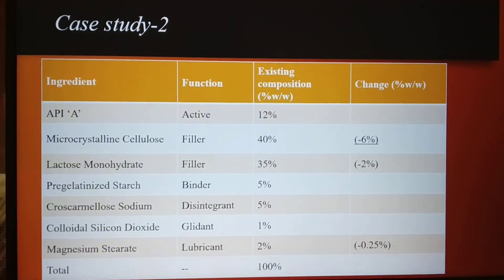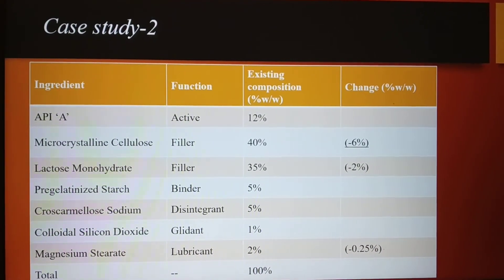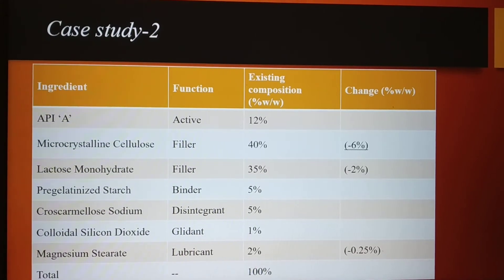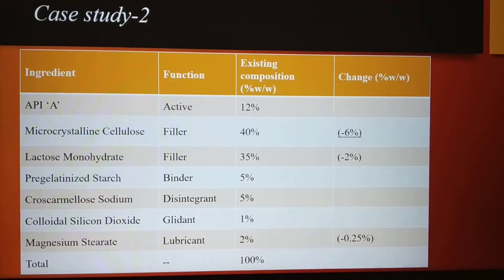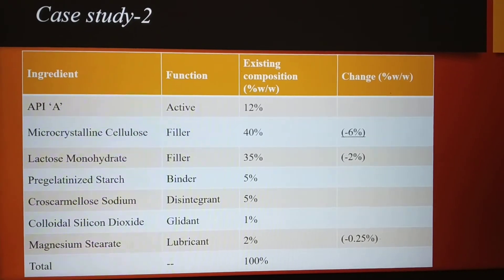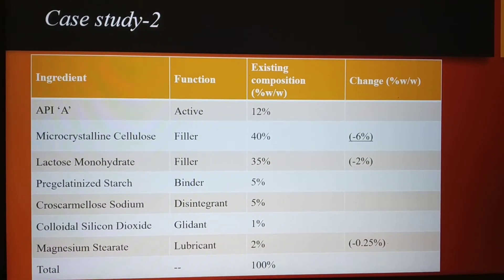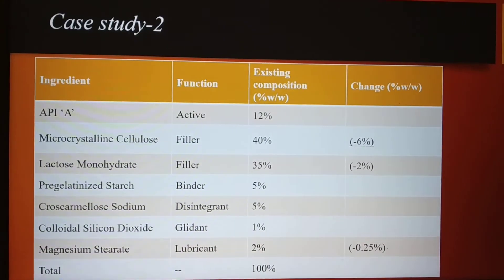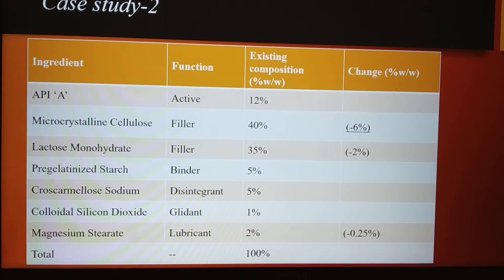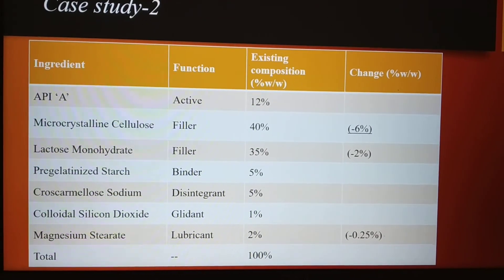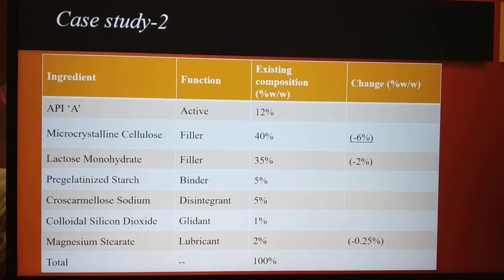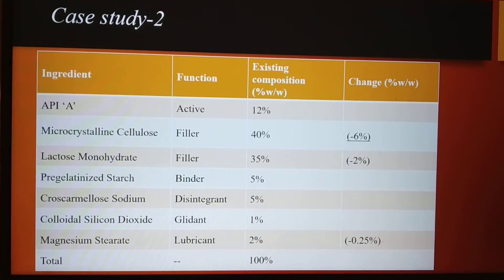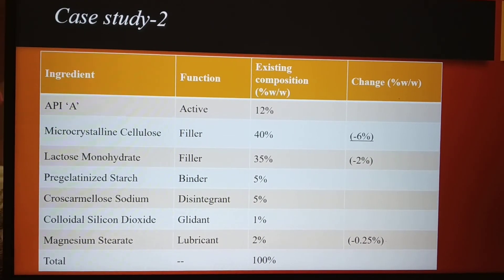In Case Study 2, the magnesium stearate concentration is within Level 1 change. However, the total change — 6 plus 2 plus 0.25 equals 8.25% — is more than the Level 1 cumulative limit. Also, the total filler quantity change is 6 plus 2 equals 8%, which means this case study also belongs to Level 2 change. That's all for today — thank you for watching, and for more case studies, keep watching.